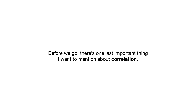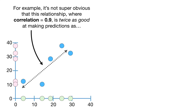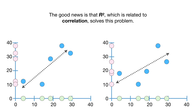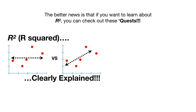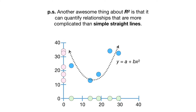Before we go, there's one last important thing to mention about correlation. Even though correlation values are way easier to interpret than covariance values, they are still not super easy to interpret. For example, it's not super obvious that a relationship where correlation equals 0.9 is twice as good at making predictions as a relationship where correlation equals 0.64. The good news is that R-squared, which is related to correlation, solves this problem. R-squared can also quantify relationships that are more complicated than simple straight lines.